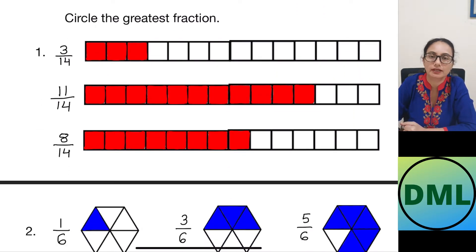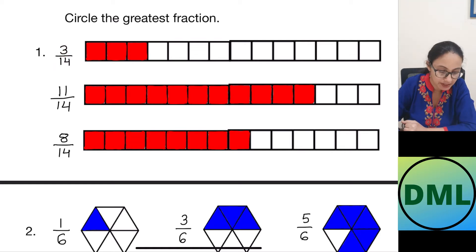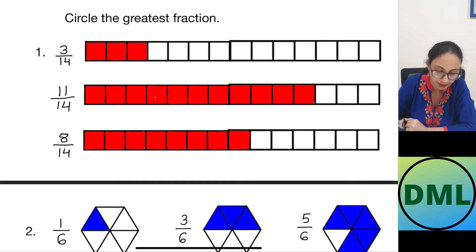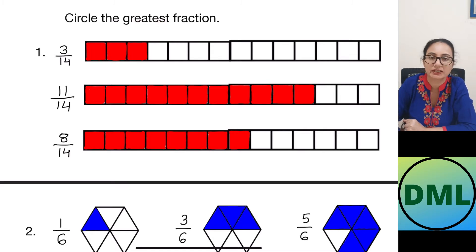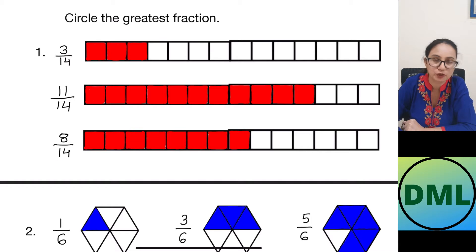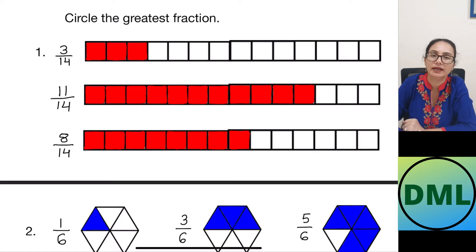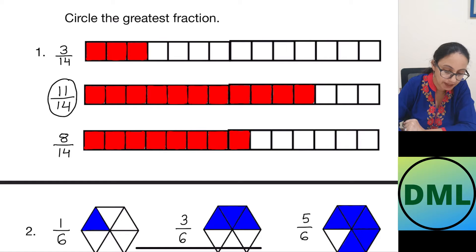Circle the greatest fraction — you have to circle the bigger fraction. Let's see the first question. 3 by 14 means out of 14 parts 3 parts are shaded. In the next fraction 11 by 14, out of 14 parts 11 parts are shaded. In the next fraction 8 by 14, out of 14 parts 8 parts are shaded. Now I have to circle the greatest fraction. The denominator is 14 for all. Now I look at the numerators: 3, 11 and 8. Which number is bigger? 11. So 11 by 14 is my greatest fraction.